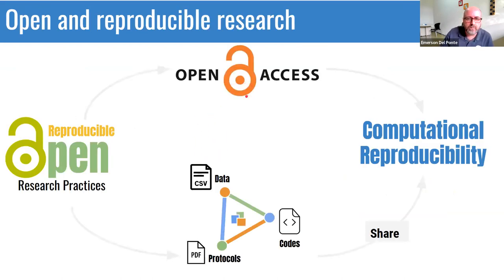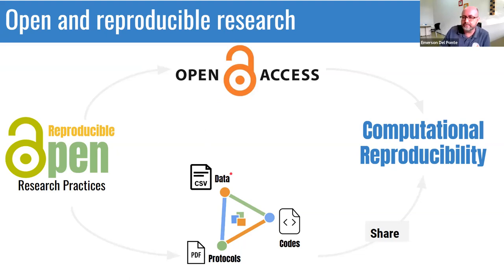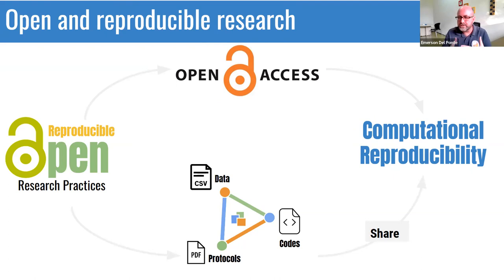Open and reproducible research: when we talk about open, it's about open access. We tend to focus on opening the article, publishing open access. The idea is that accessibility of our research is important for people. If we talk about reproducible research practices, to reproduce a work, we need the data essentially. We need the data from that work. We need to know the protocols and the codes to reproduce that research. We call this computational reproducibility — the ability to reproduce a work that was done by someone else.